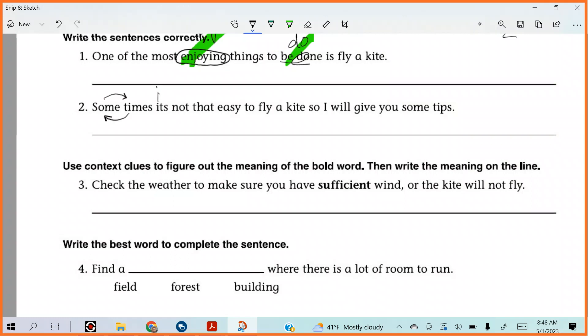All right. Who else wants to jump in here? We can't let Fred correct the whole thing. Sometimes it's not that easy to fly a kite. What do we need before that conjunction? And Alisa, we do. Comma. So I will give you some tips. I don't think I see anything else. So how many corrections do we have with this? One, two, three.